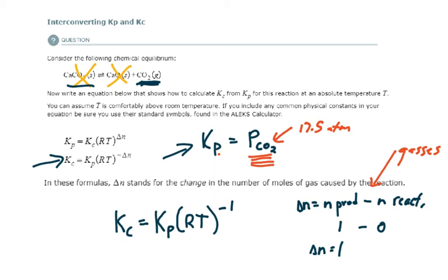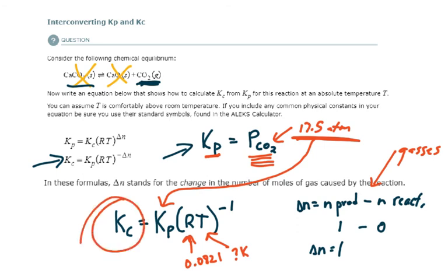And I say, what's Kc? You have to take this 17.5 because it's equal to Kp and plug it in right here. R would be 0.0821, I give you the temperature in Kelvin, and then you raise it to the negative one power and you actually have a value for Kc.